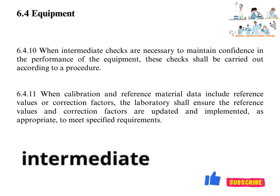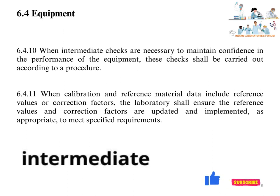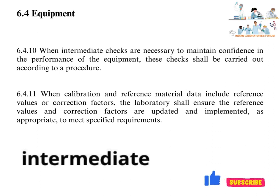When intermediate checks are necessary to maintain confidence in the performance of the equipment, these checks shall be carried out according to a procedure. An intermediate check is the performance check of equipment in between two calibrations. The laboratory should have a procedure on how to perform the intermediate check, what the acceptance criteria are, and a defined template for recording intermediate check data.